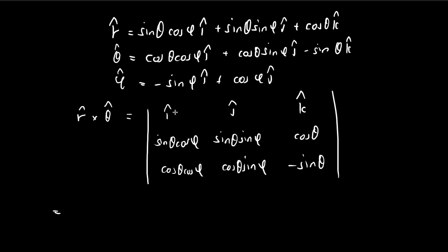Now let's just take a look at the i component first. So the i component, we have negative sine square theta, sine phi. And then we minus cosine square theta, sine phi.